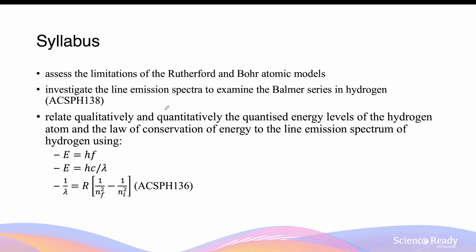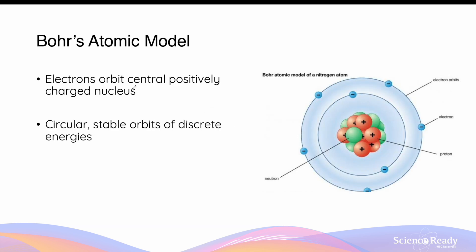Hello everybody, this video is on the Bohr atomic model. Bohr's atomic model describes that electrons orbit a central positively charged nucleus and that these electronic orbits are circular and stable in nature and they are of discrete energy levels.